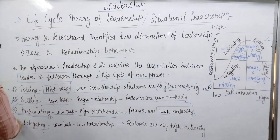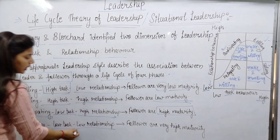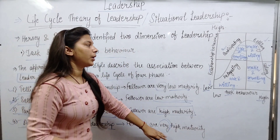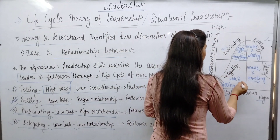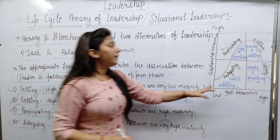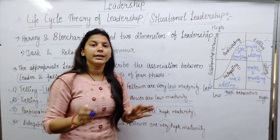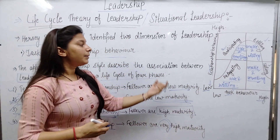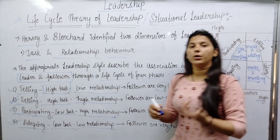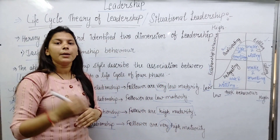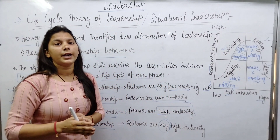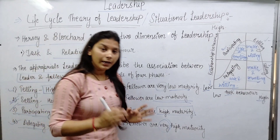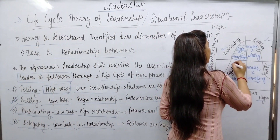The fourth phase is Delegating, which involves low task and low relationship. This applies when followers are of very high maturity — they are both able and willing. In delegating, the leader shares the work with others. The followers already know what to do and don't need to be directed or interfered with. Because they are already able and willing, the leader simply delegates the work.